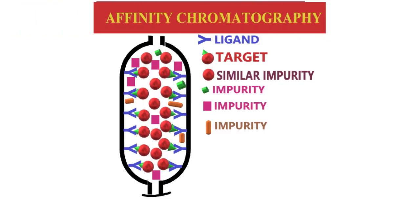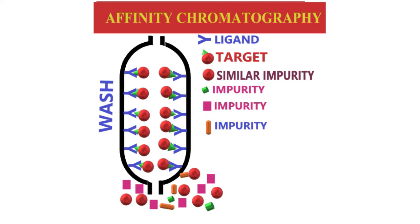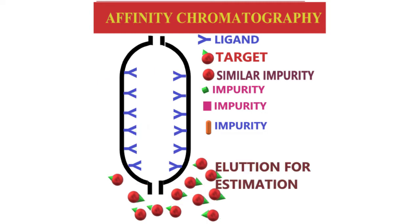The amino acid substitution results in an alteration of the net charge, which is used in charge-based methods of HbA1c measurement. High performance liquid chromatography (HPLC), electrophoresis, and cation exchange chromatography are used in this approach.